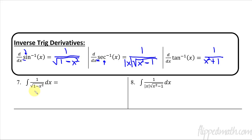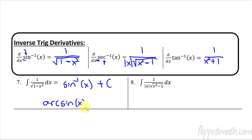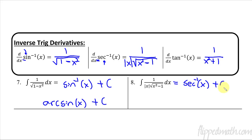Going backwards, you just have to recognize the pattern. One over square root of 1 minus x squared — the 1 comes first, it's a square root — that's the antiderivative sine inverse of x plus c, or equivalently arc sine of x plus c. For the one with absolute value of x and x squared minus 1, that's secant inverse of x plus c, or arc secant of x plus c.